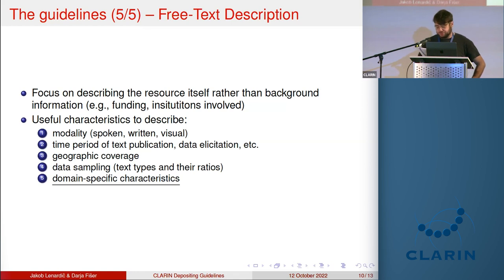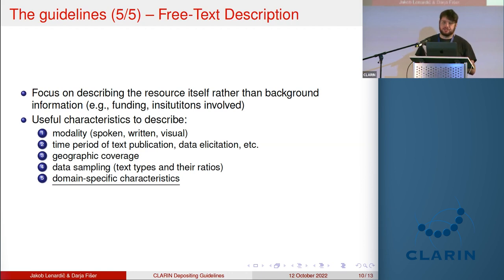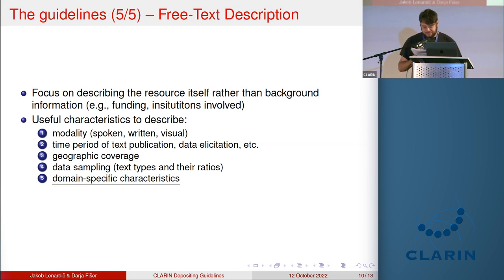For the free text description, we believe this should mainly focus on the description of the resource itself rather than on background information such as funding. In our previous survey in the context of CLARIN Resource Families, we found that too much focus on background information rather than what's actually in the corpus is quite a problem with many existing deposits. The descriptions should be maximally informative to the research needs of an external user, and depositors should be explicitly prompted to consider describing specific features of the resource.